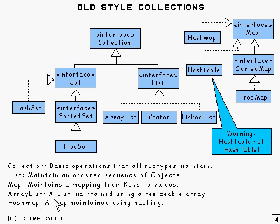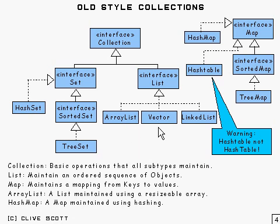ArrayList maintains a list using a resizable array, and HashMap implements a map using hashing. If you want to know what hashing is, any book on computer science will cover that. There are some other minor differences — with Vector, for example, you can control how the array resizes when it fills up, whereas those parameters are different in ArrayList. If you want to see any of this, just look at the code or documentation — it's really straightforward. Let's go and see how they're actually used.